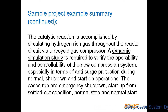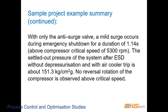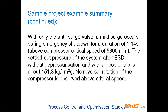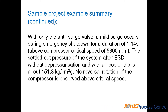The cases run are: emergency shutdown, startup from settled-out condition, normal stop, and normal start. With only the anti-surge valve FV205, a mild surge occurs during emergency shutdown for a duration of 1.14 seconds above the compressor critical speed of 5,300 rpm. The settled-out pressure of the system after ESD without depressurization and with air-cooler trip is about 151.3 kg/cm².